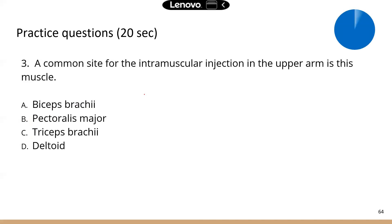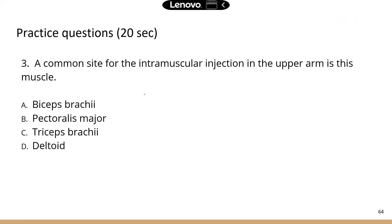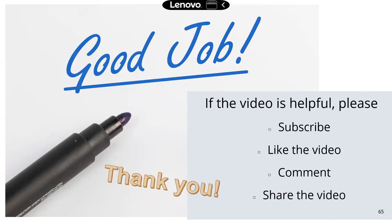Next question: a common site for intramuscular injection in the upper arm — most of us have gotten a flu shot, COVID shot, or other injections in the arm. It goes into the muscle, which is the deltoid muscle. That's the end of this lesson — I hope it was helpful. Thank you for watching, and I'll see you next time.